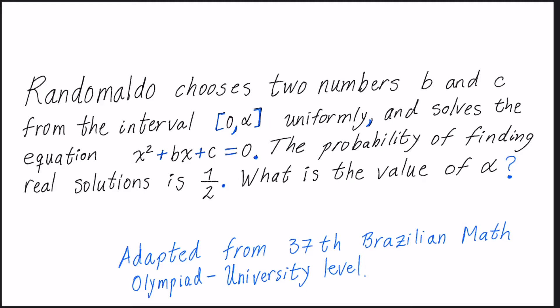So how can we start this problem? We have the equation x squared plus bx plus c equals 0. We know this problem has real solutions with probability 1 divided by 2. Which condition can be used to make this equation have real solutions? We know from algebra that if b squared minus 4 times 1 times c is bigger or equal than 0, then we have real solutions.